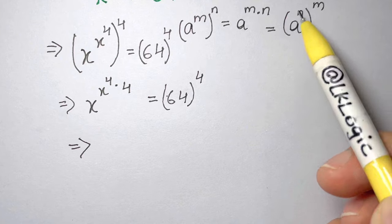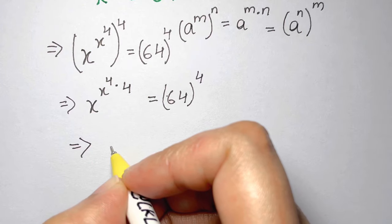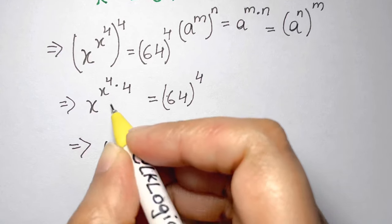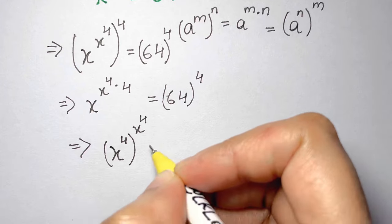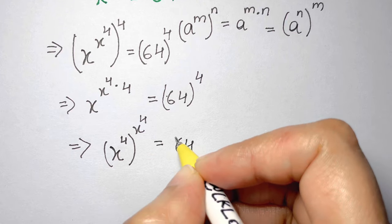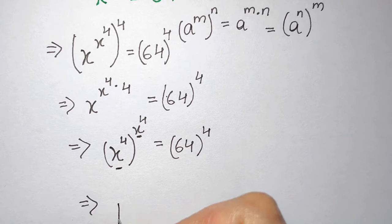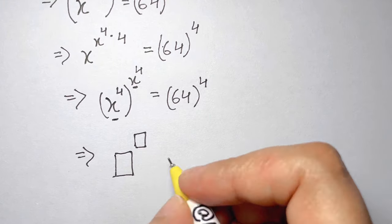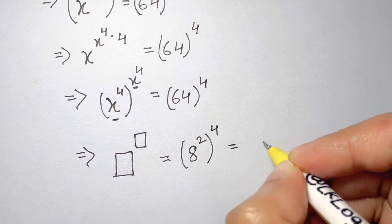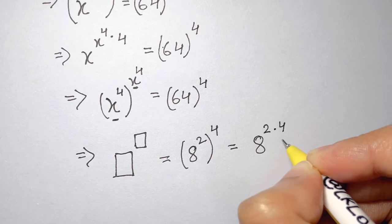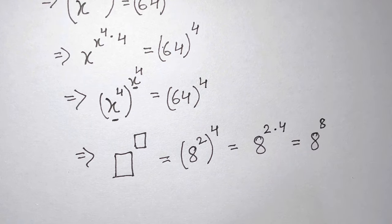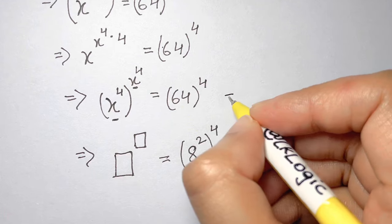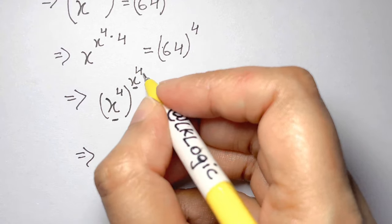Now, as per the law, we can reverse the powers. So let's take 4 inside: x to the power of 4, whole to the power of x to the power of 4, equals 64 to the power of 4. Now we have something to the power of something. Notice that 64 can be written as 8 squared, so 64 to the power of 4 becomes 8 to the power of 8 using power-to-power multiplication.